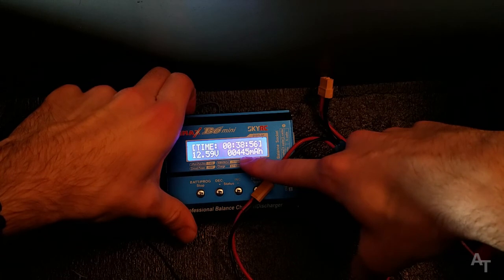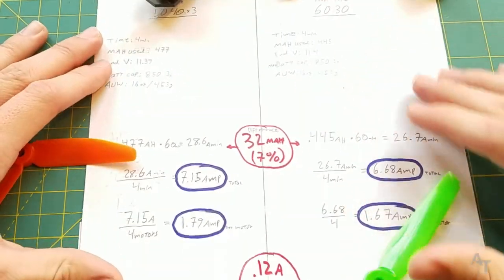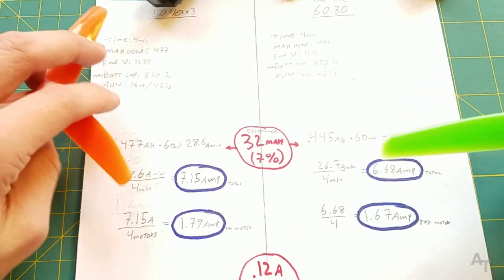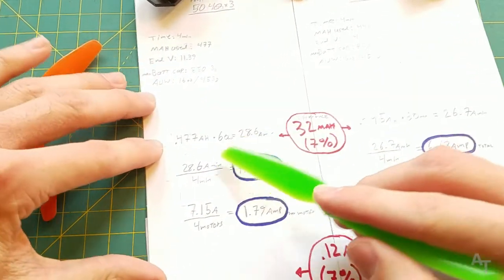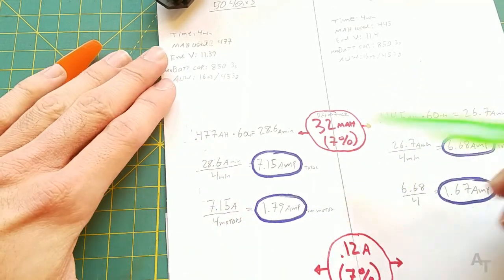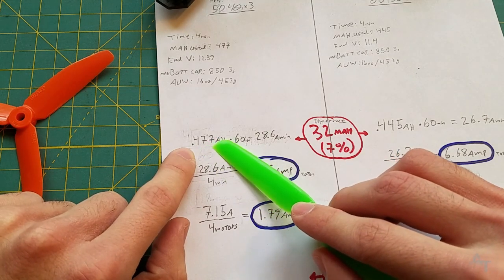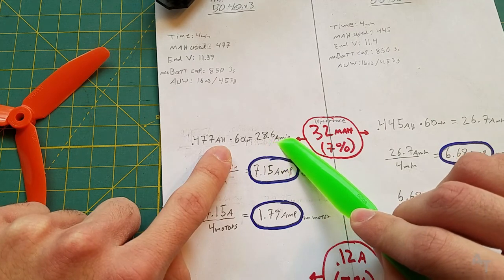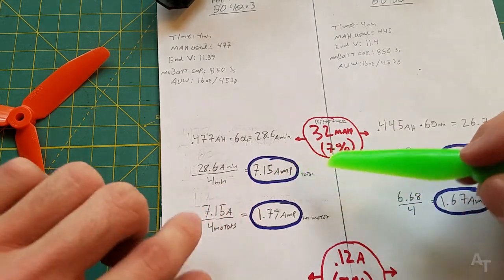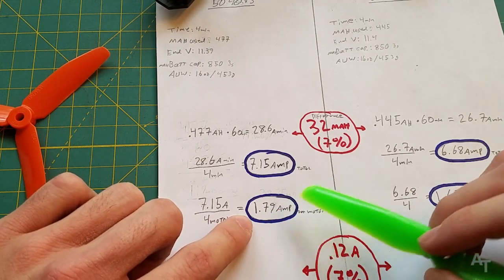It says here it has put in 445 milliamp hours. Let's take a look at the data. I've pre-crunched all the numbers just so you wouldn't have to sit through me trying to figure all this stuff out. Big thanks to RC Groups and Dave C from like 13 years ago. The formula I used to find our total amp draw: take the total milliamp hours used, which in this case was 477, convert to amp hours (0.477), multiply by 60 minutes to get 28.6 amp minutes, then divide by the total flight time. We get 7.1 amps total, and if we divide by four for each motor, we get 1.79 amps per motor, which is really really low.